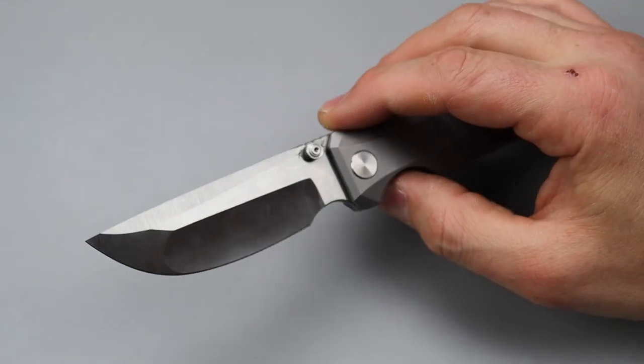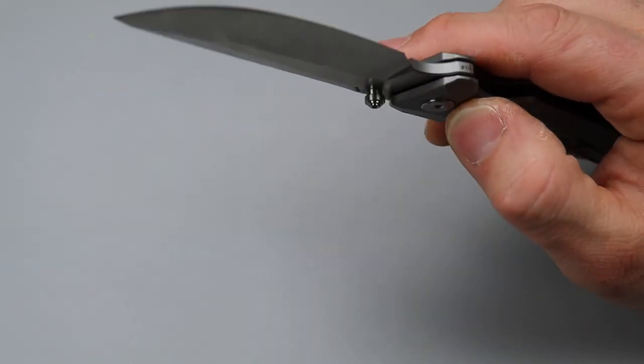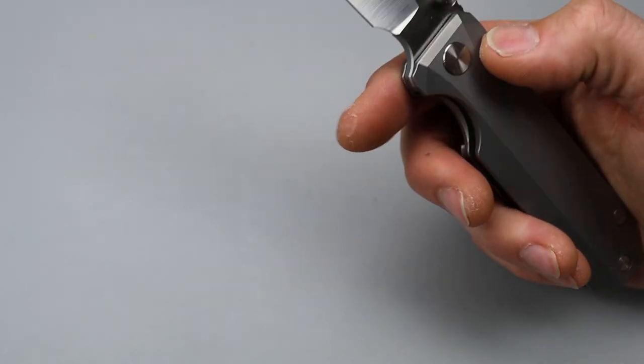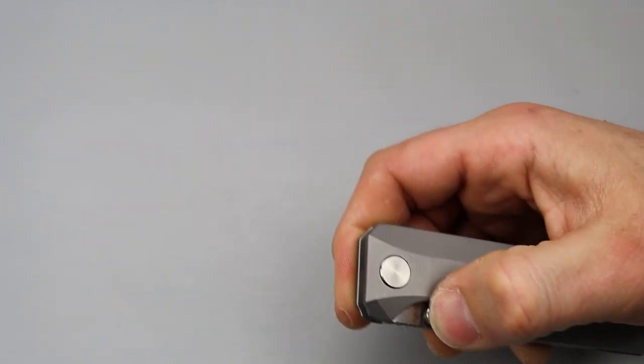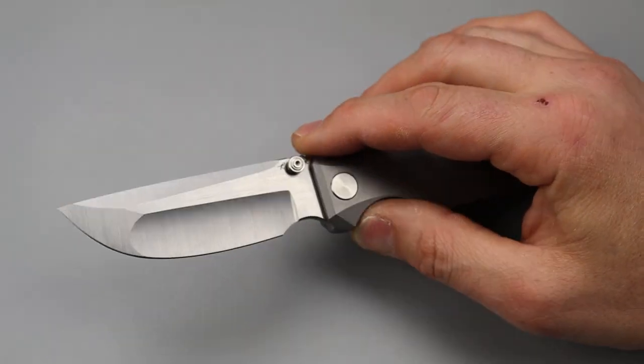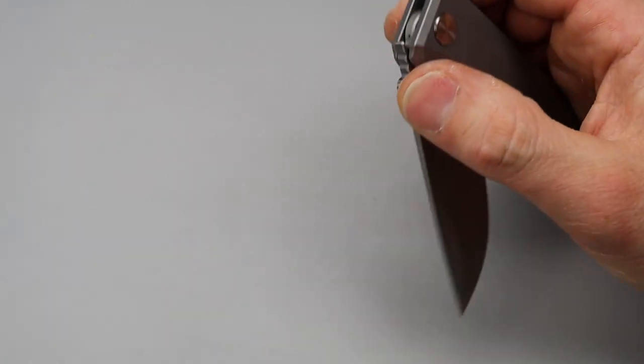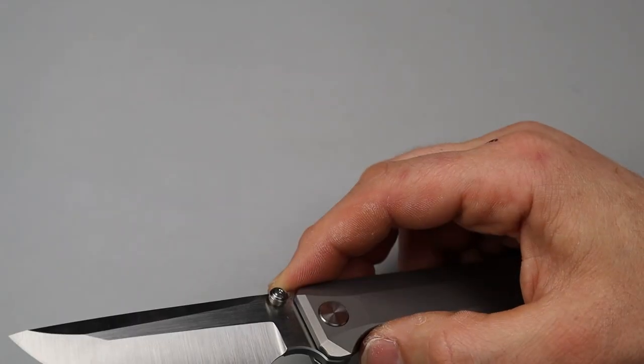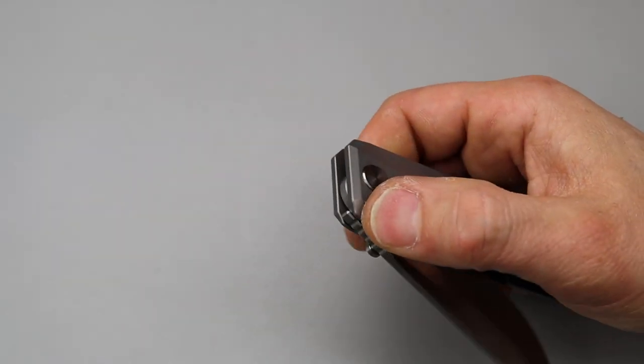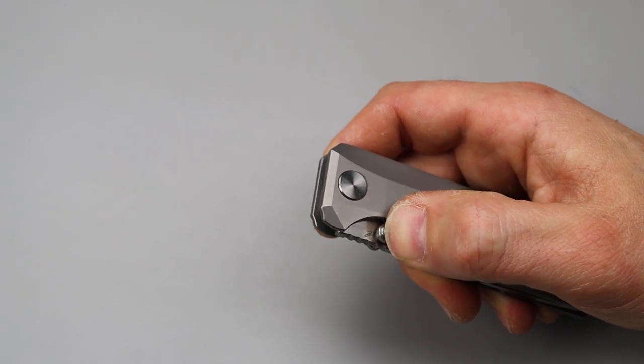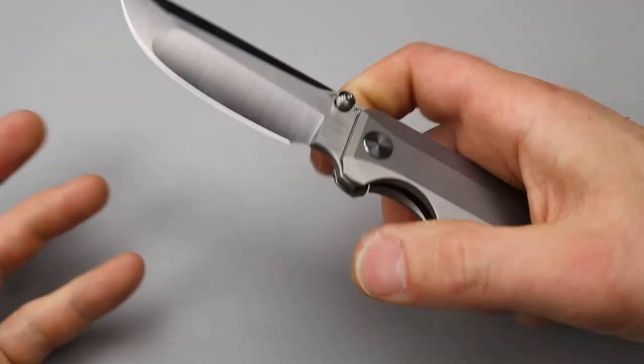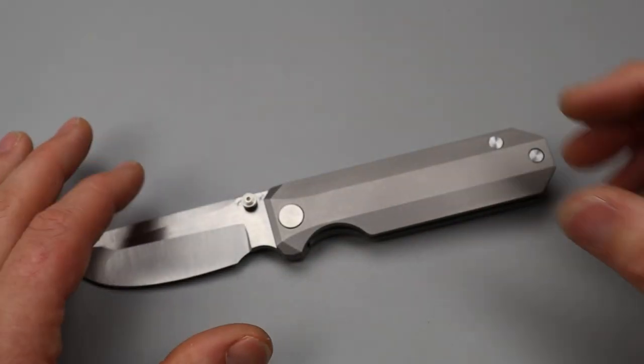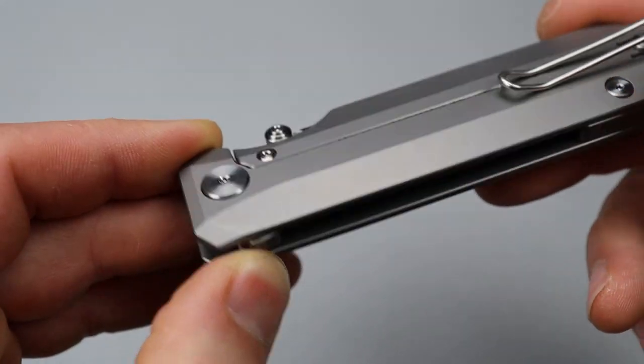It's going to be the hand-ground Magnacut steel, hopefully at a good HRC. And the stone milled version will have DLC hardware and a DLC backspacer. Very cool. So I'm guessing the blackout version is going to be all DLC. That's awesome.